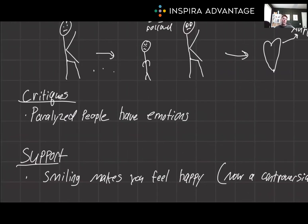So what are some critiques of this theory? While the James-Lange theory was groundbreaking for its time, it faced several criticisms. One major critique was that it did not account for individuals with impaired physiological responses who could still experience emotions. For example, people with a spinal cord injury who cannot feel certain physiological changes still report feeling emotions. Critics argue that this undermines the theory's core premise that physiological changes are necessary for emotional experiences.